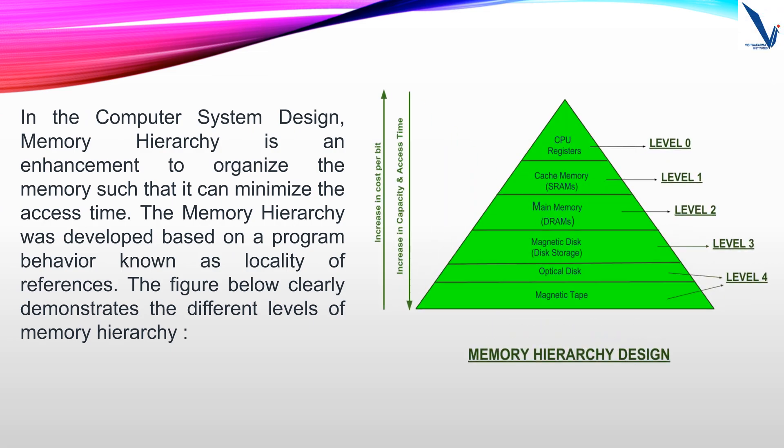Let's start with memory hierarchy. The memory hierarchy was developed based on a program behavior known as locality of references. The figure clearly demonstrates the different levels of memory hierarchy. Level 0 is the CPU registers. Level 1 is the cache memory, also known as static RAM. Level 2 is the main memory, also known as dynamic RAM. Level 3 is the magnetic disk or disk storage. Level 4 is the optical disk and magnetic tape.